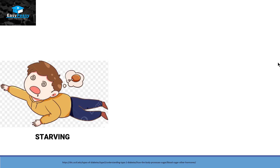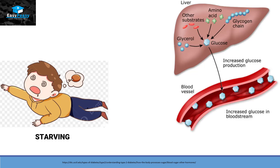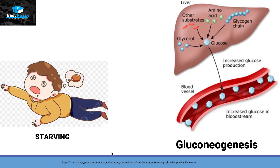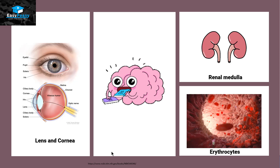If we are starving and haven't had a meal for a long time, production of glucose from glycogen is not enough to meet the body's needs. So liver cells use other means to produce glucose, including amino acids, glycerol, and lactate. These are converted back into glucose, which goes into the bloodstream to balance glucose concentration. This process of converting non-carbohydrate sources into glucose is called gluconeogenesis. Certain organs like the brain, renal medulla, erythrocytes, and the lens and cornea use glucose as their form of energy.